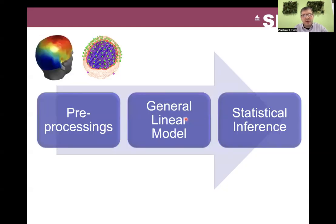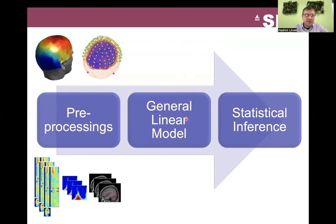This course will focus on application of statistical parametric mapping to MEG and EEG data. To get our data to the stage where it can be processed by SPM, we need first to perform a set of preprocessing steps, which are not different in SPM from what is implemented in other toolboxes, such as conversion, epoching, filtering, et cetera.